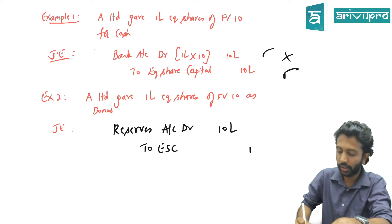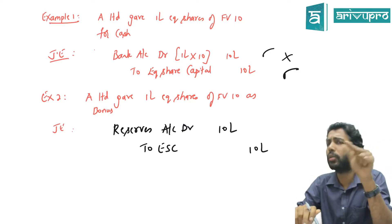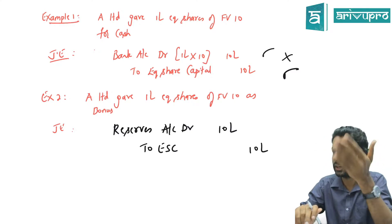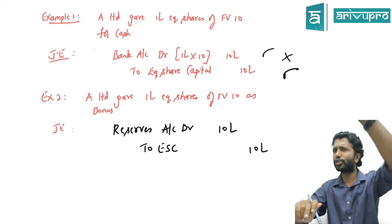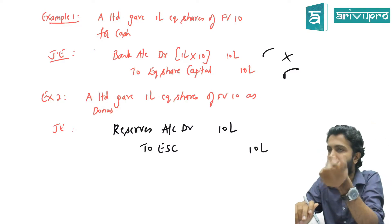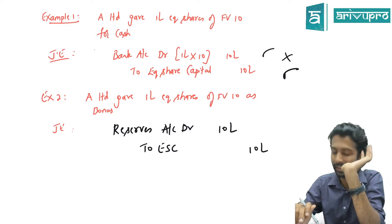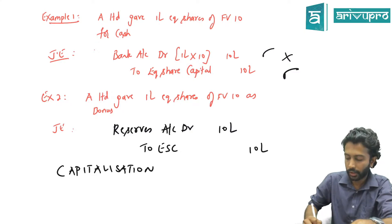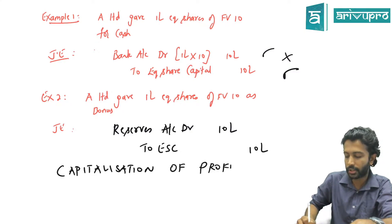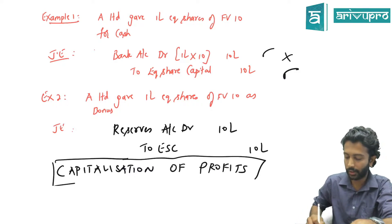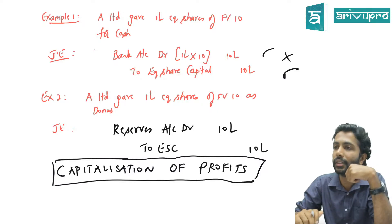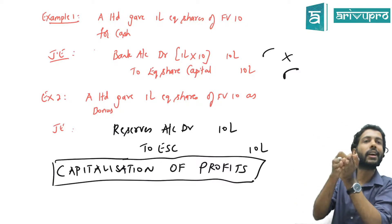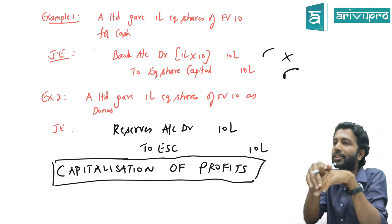The company is going to use their reserves — profits shown under reserves and surplus like P&L account, general reserve — those reserves will be utilized and the company gives out bonus through them. Hence another name for bonus issue is capitalization of profits. The profit is getting converted into capital, hence that name. In some problems they say 'pass journal entry for capitalization of profit' — that means pass the journal entry for bonus.